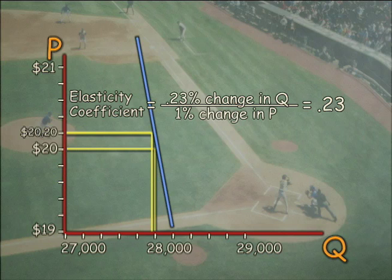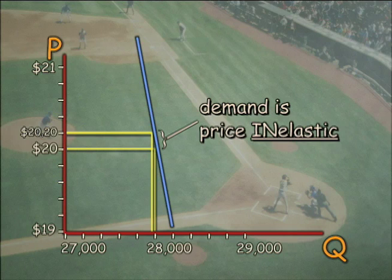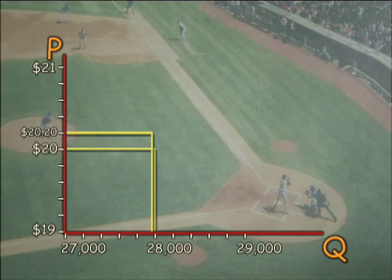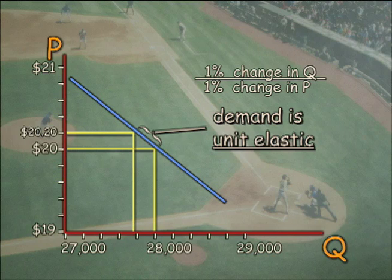Now, an elasticity coefficient of less than one is the same as saying inelastic. So at current prices, the demand for baseball tickets is price inelastic. If a one percent price rise were to cause exactly a one percent decrease in ticket sales, we'd call the demand for tickets unit elastic, sometimes referred to as an elasticity of one.